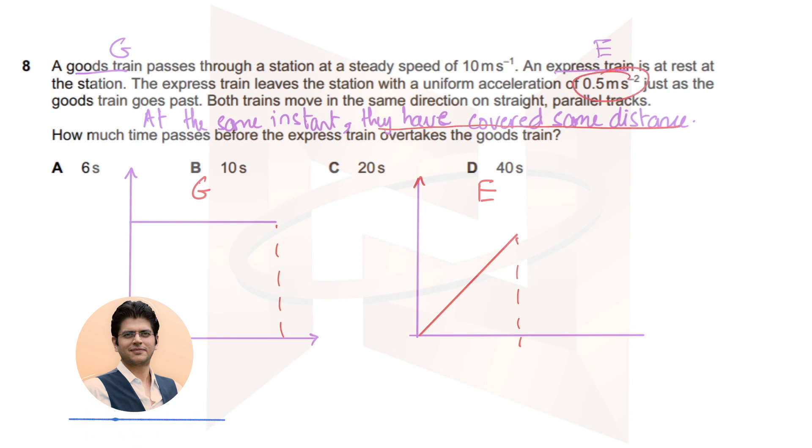Now, they've given you the acceleration, so you can use s equals ut plus half at squared. Initial speed is zero, so s equals one half at squared. This is the distance, this is this area under the graph. Acceleration given is 0.5, so half into 0.5 into t squared.